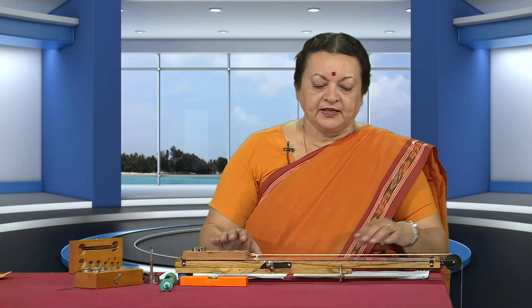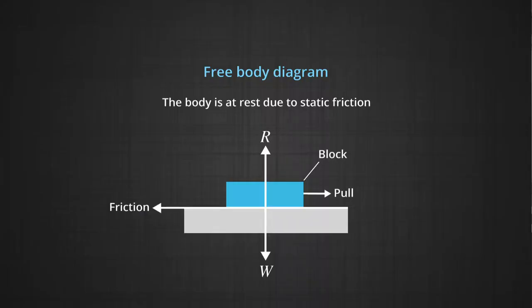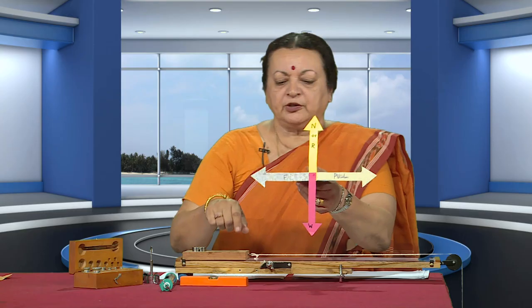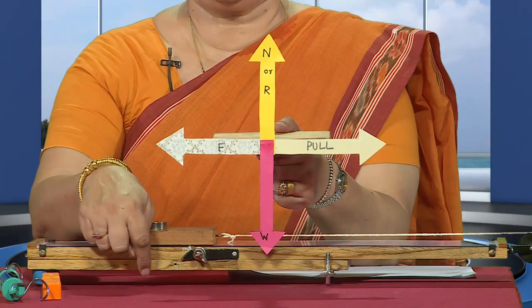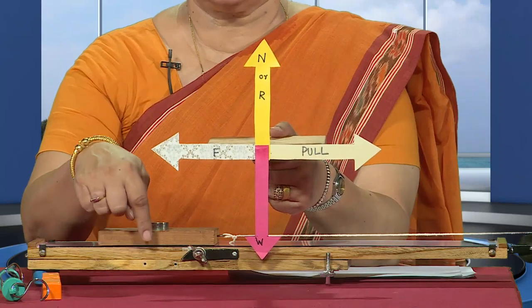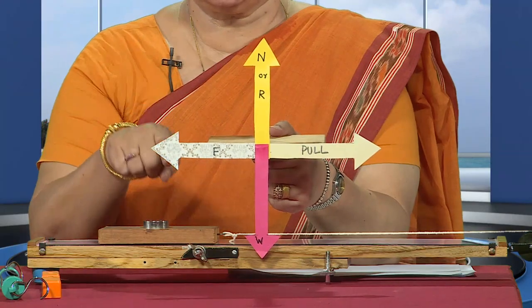What we are going to do is make sure that the pull exerted by the weights placed in the pan — including the weight of the pan itself — matches the value of friction between the two surfaces. Because the pull is in one direction, the force of friction acts in the opposite direction. Drawing a free body diagram for the block: the weight of the block acts downwards, and the reaction — the normal force — acts upwards.